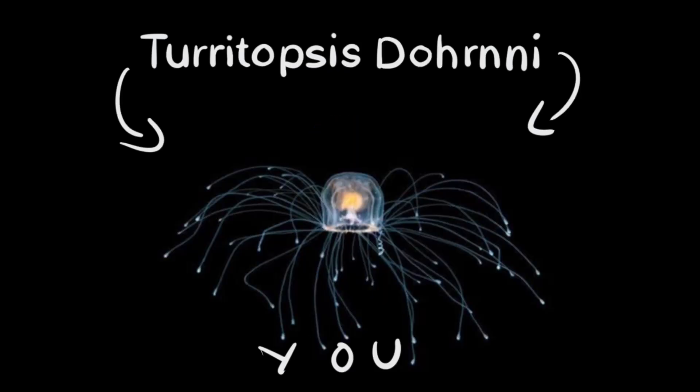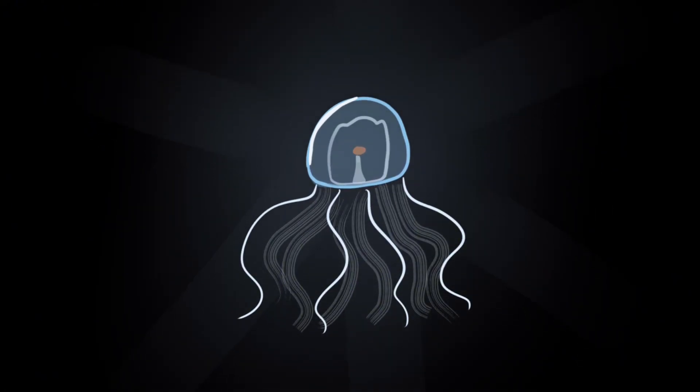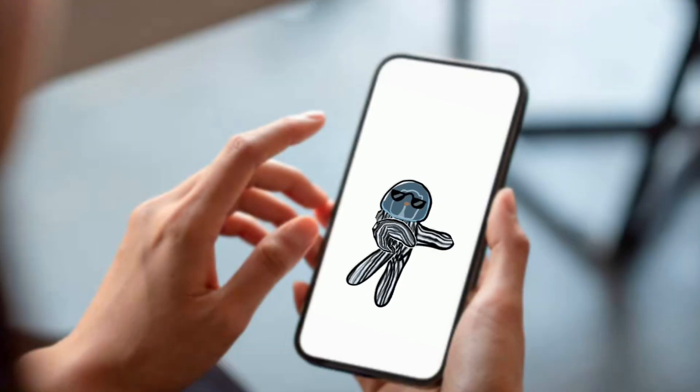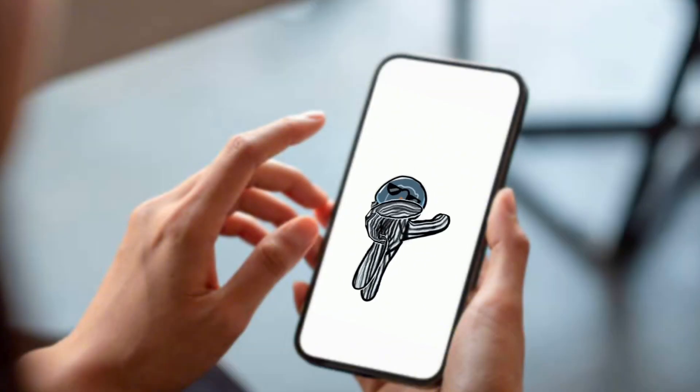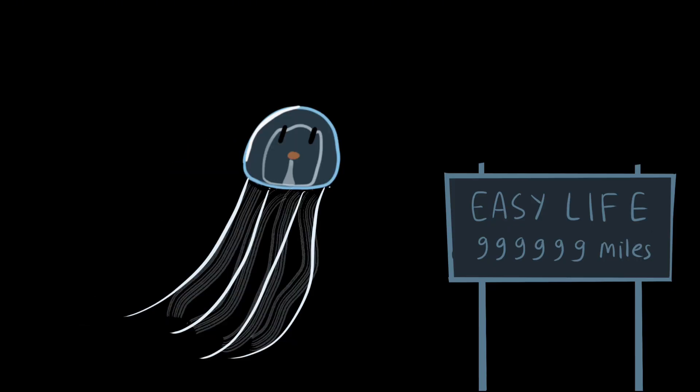You are a Turritopsis dornii, a jellyfish that scientists refer to as biologically immortal. That's right, immortal. But hold off on the victory dance. You may not age like other creatures, but your life? Far from easy.